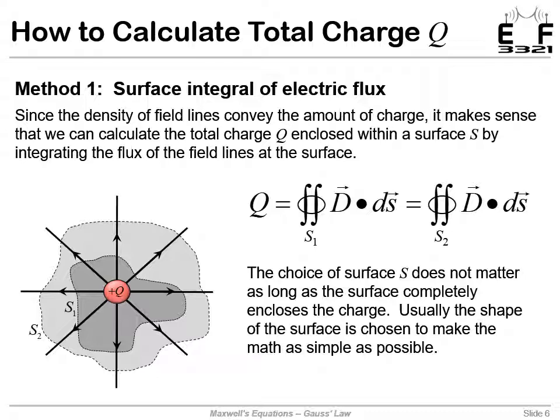To understand Gauss's law, the best way is to understand we're looking at two different ways of calculating the total charge given some charge distribution. Method number one: we know that the electric field lines emerge from a charge. If we can wrap that charge or multiple charges even within some volume, and here we're doing it two different times with two different surfaces, I'm only showing a two-dimensional cross section, but imagine these being three-dimensional blobs.